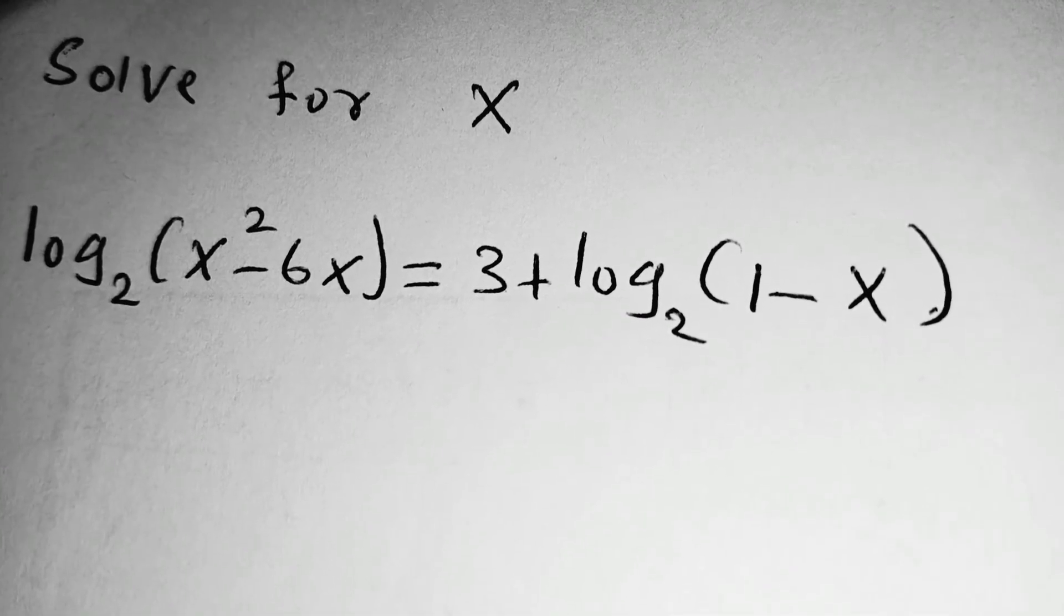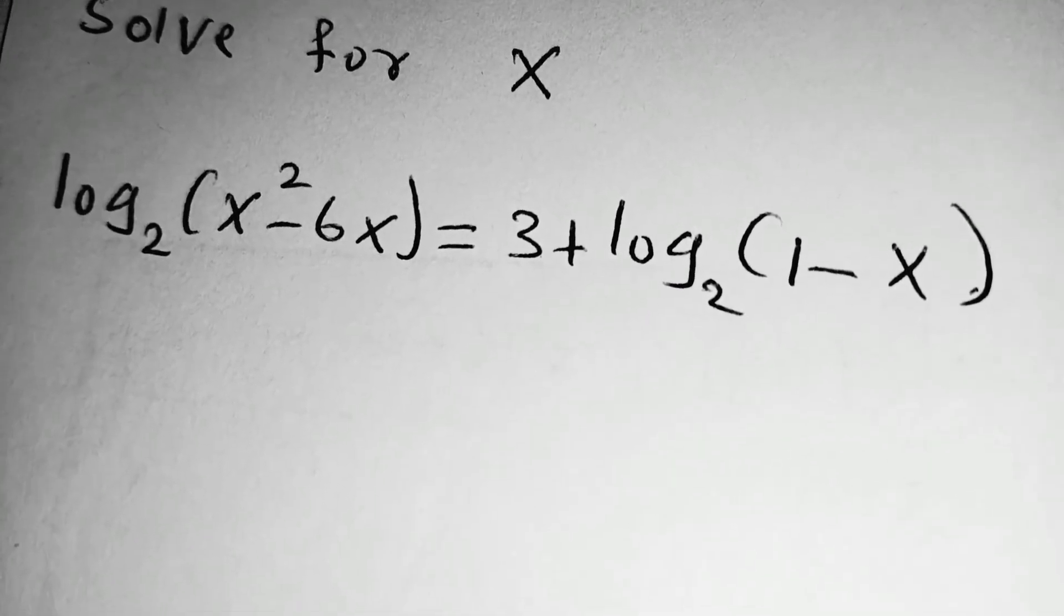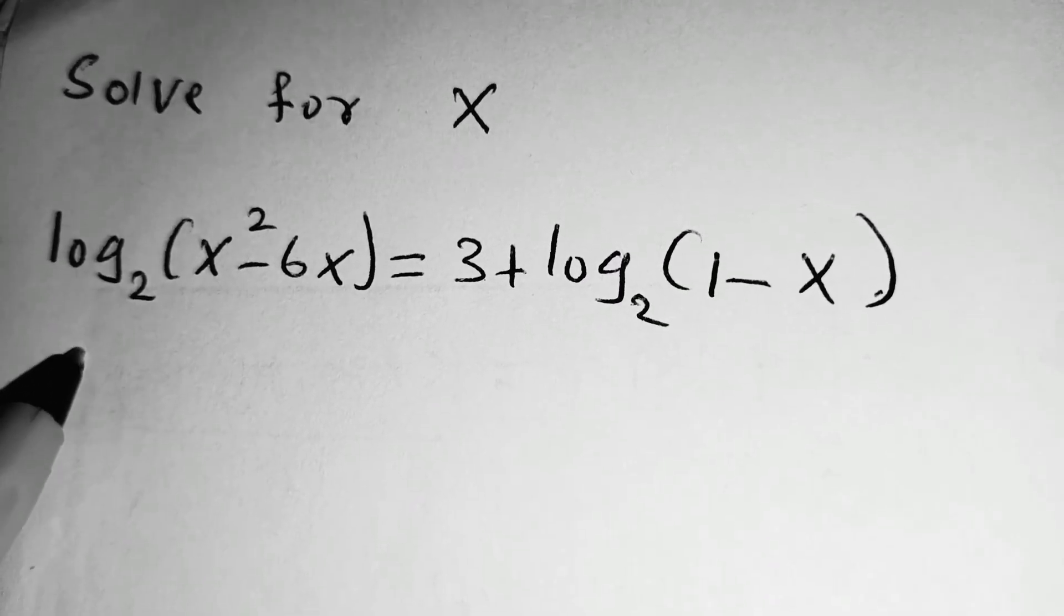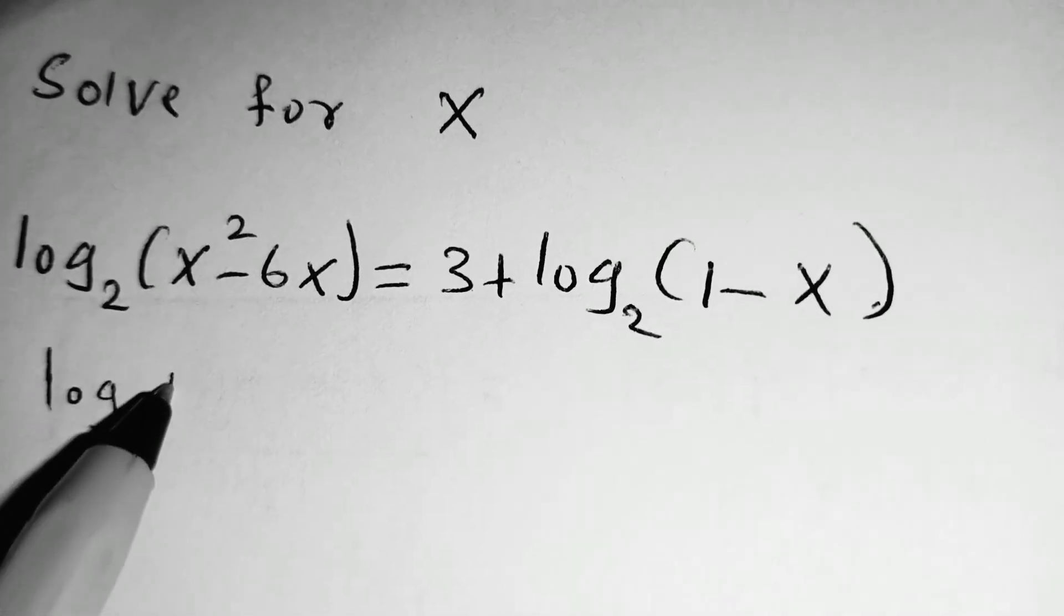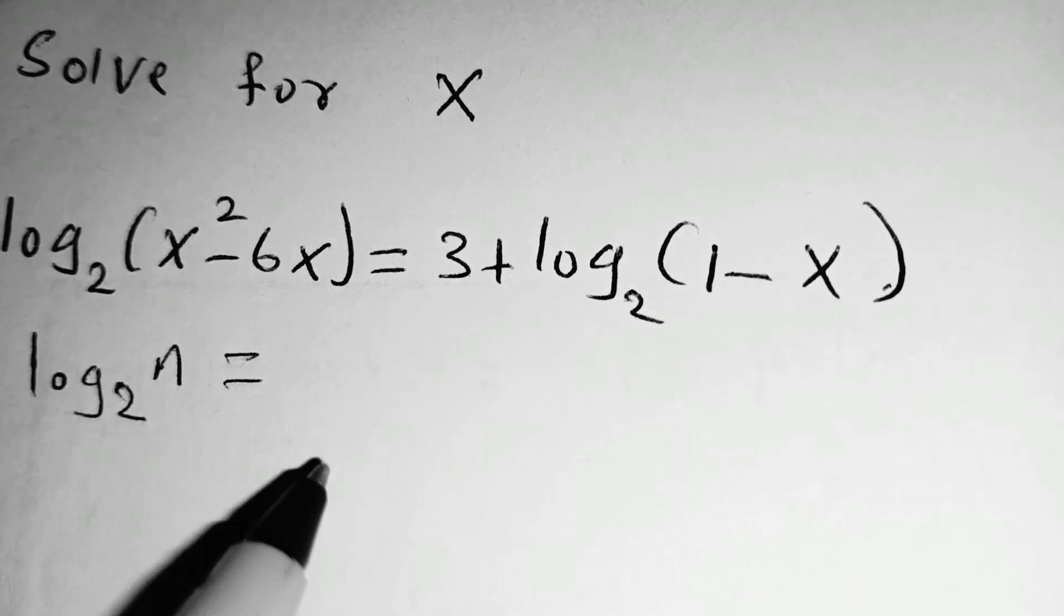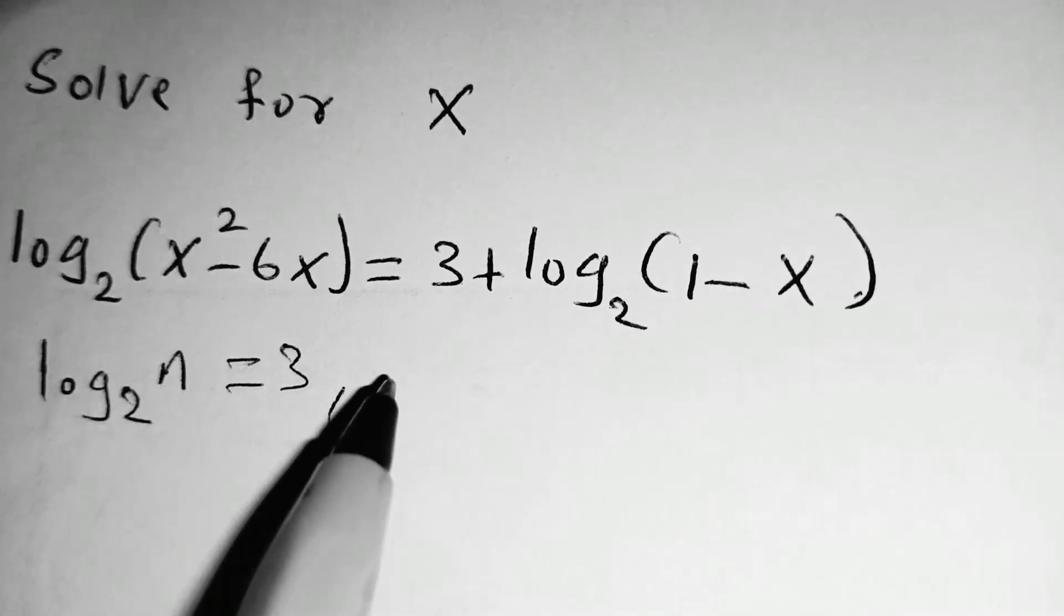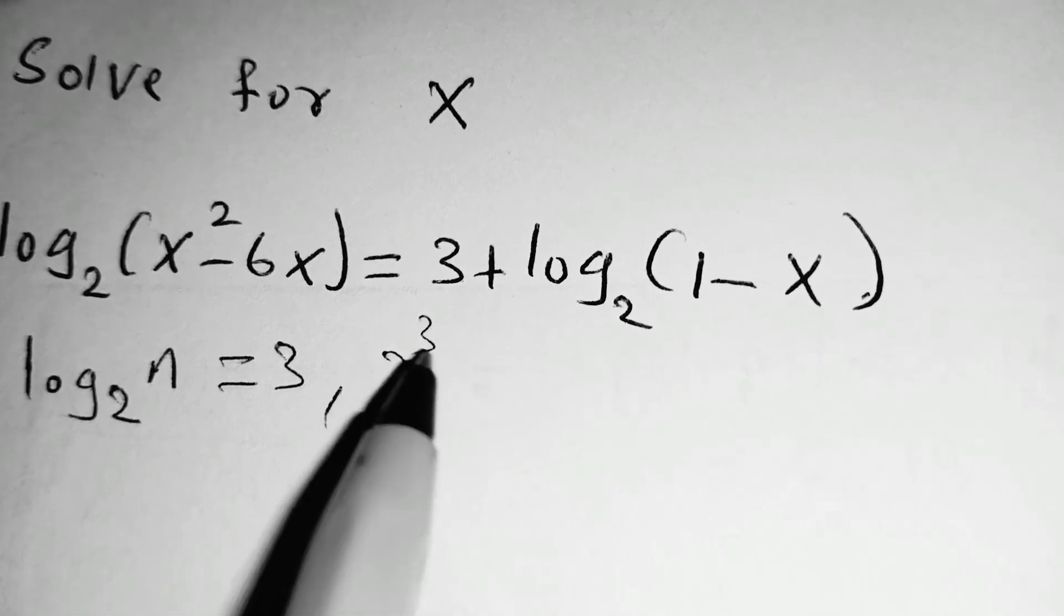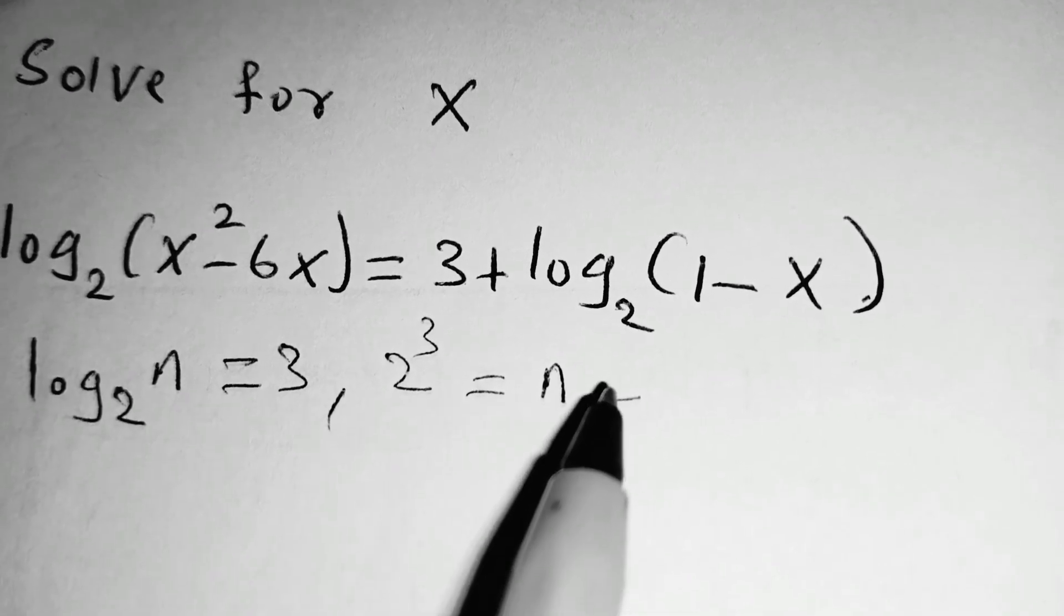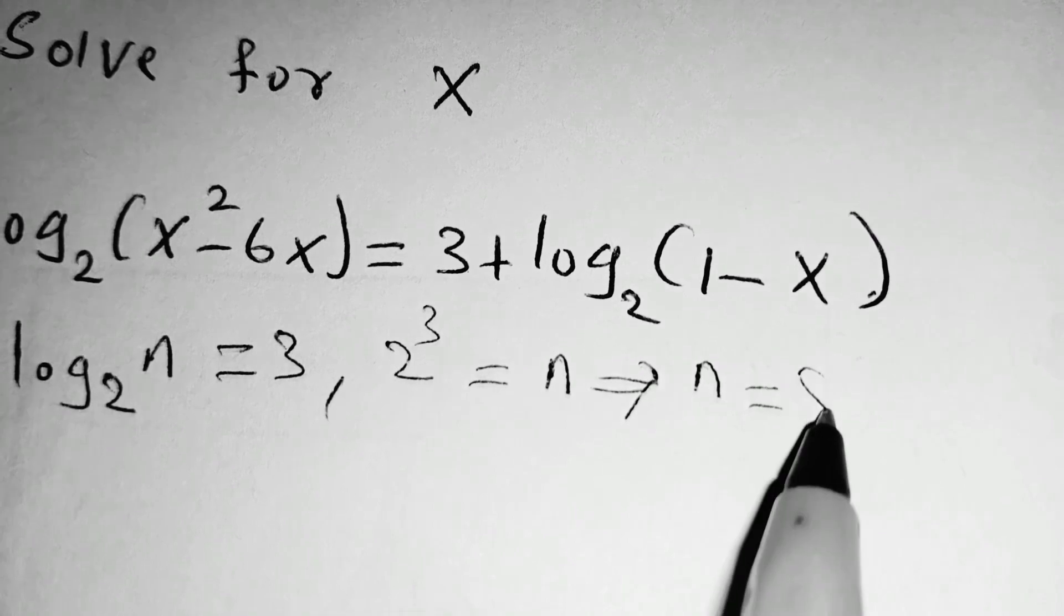So to do that, first of all, you write 3 to base of 2 in the form of logarithm. So you let log of n to base 2 be equal to 3, which follows that 2 power 3 is equal to n, which follows that n is equal to 8.